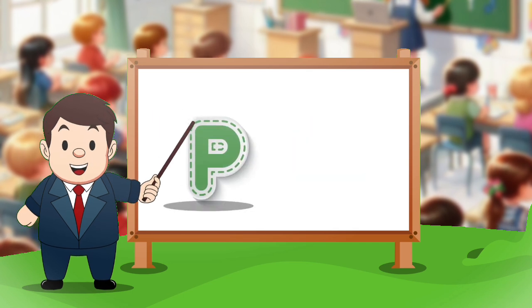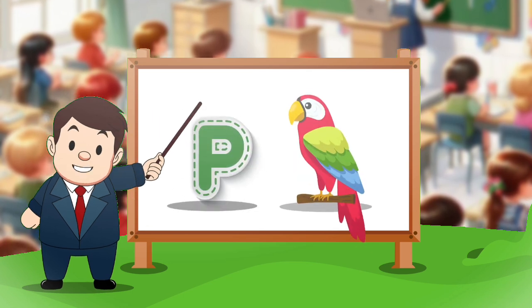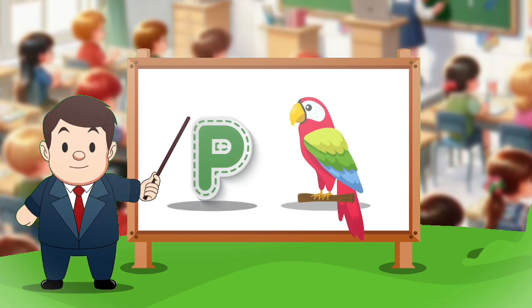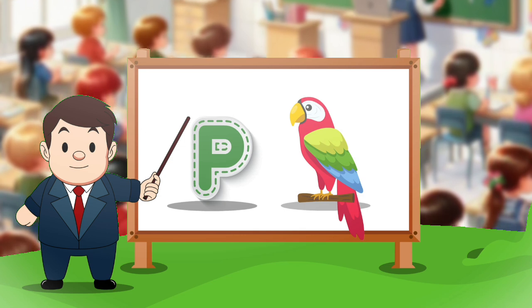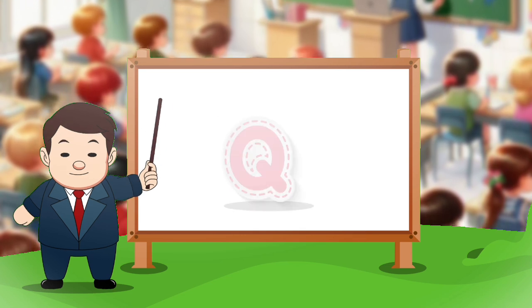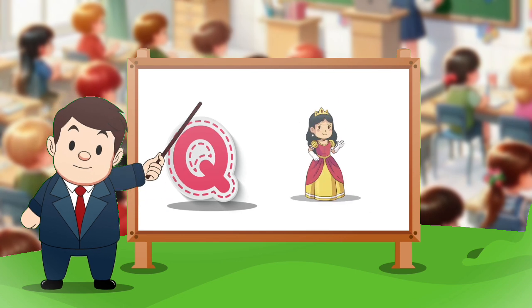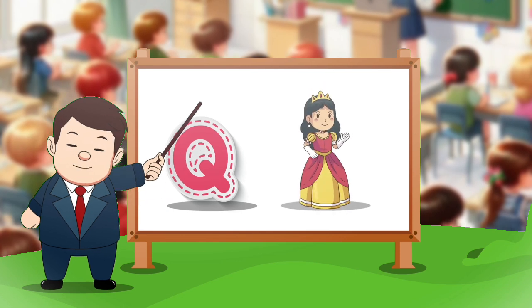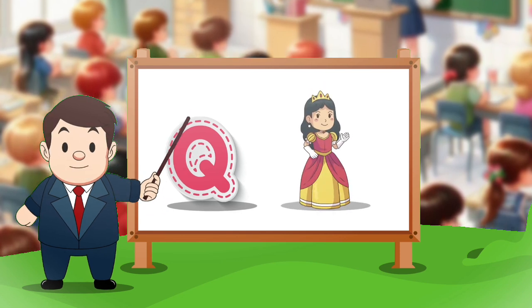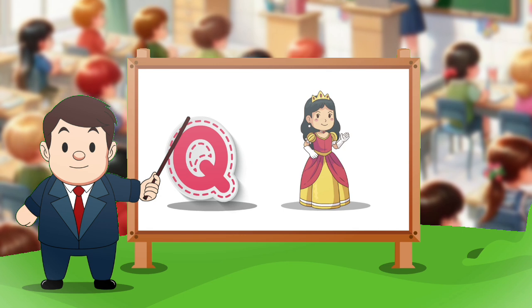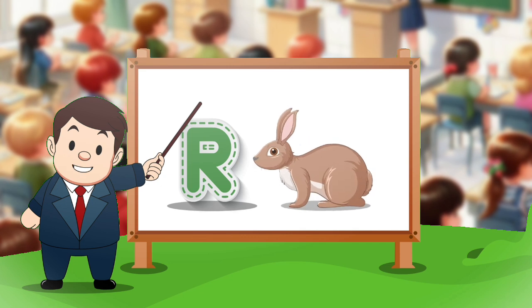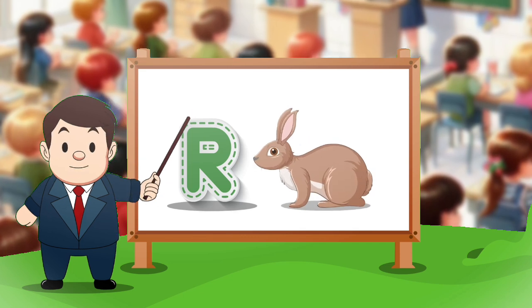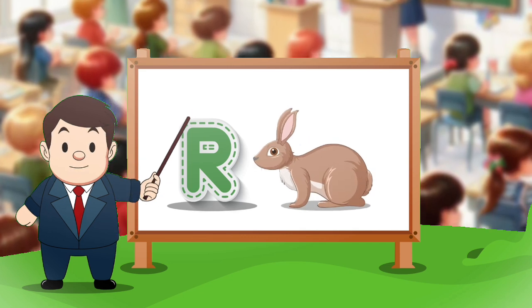P. P for parrot. Q. Q for queen. R. R for rabbit.